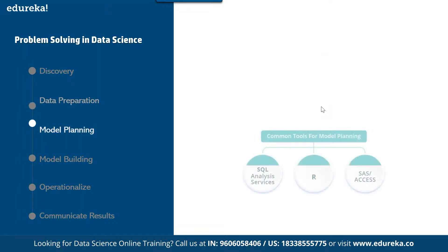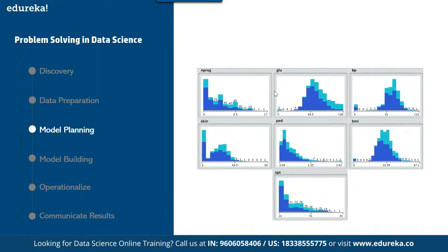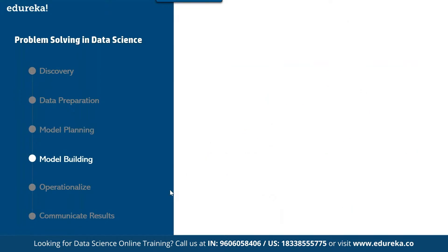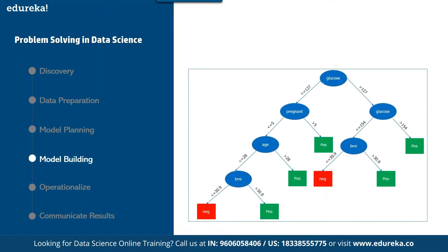Once that is done, we move on to model planning. In this phase we determine the methods and techniques to draw relationships between variables. We apply exploratory data analytics using various statistical model formulas and visualization tools. We use visualization techniques like histograms, line graphs, and box plots to get a fair idea of the distribution of data. For example, number of pregnancies is shown in this format, glucose in a graphical format. There's also a demonstration of a decision-based tree based on different attributes.